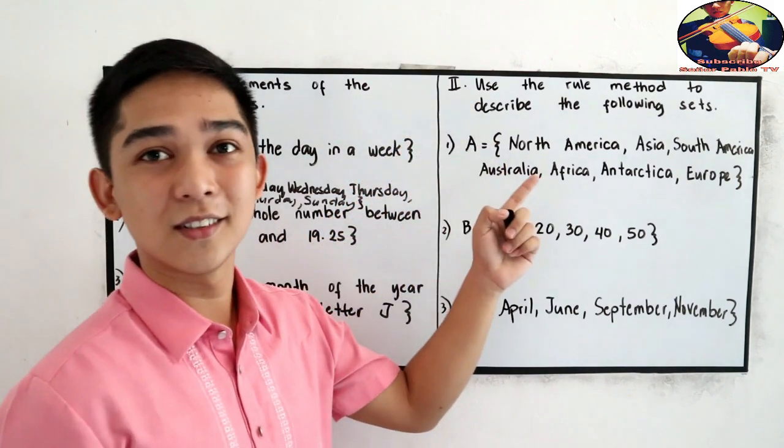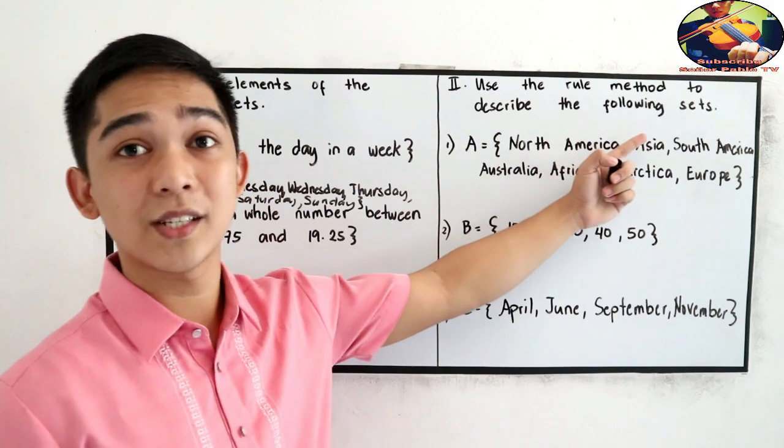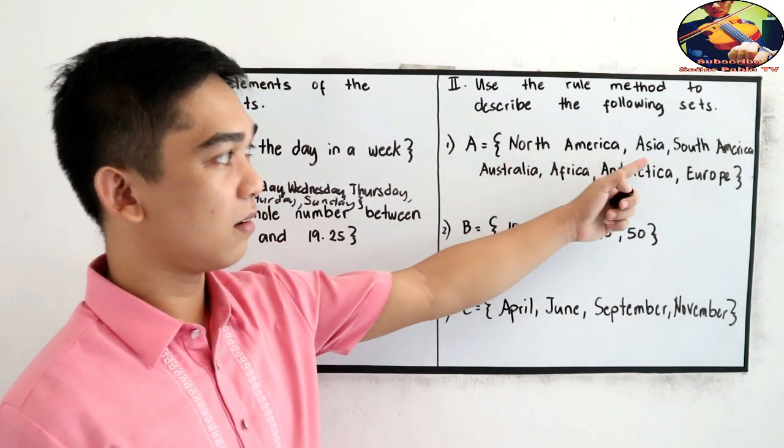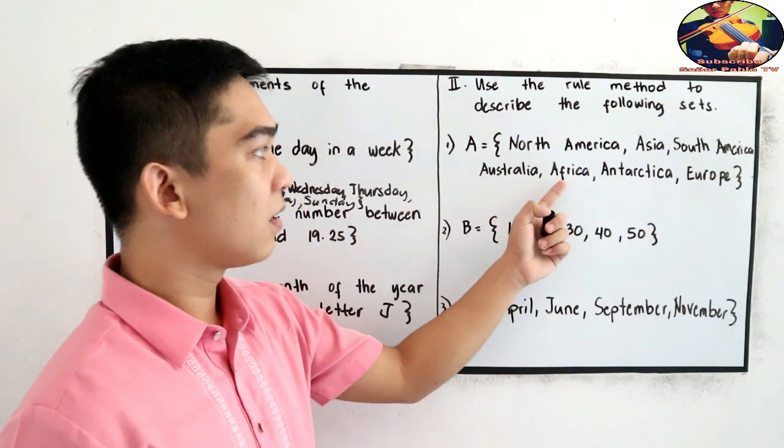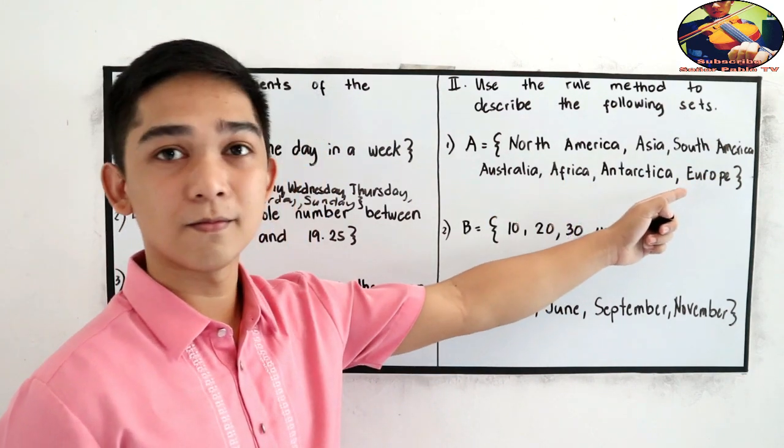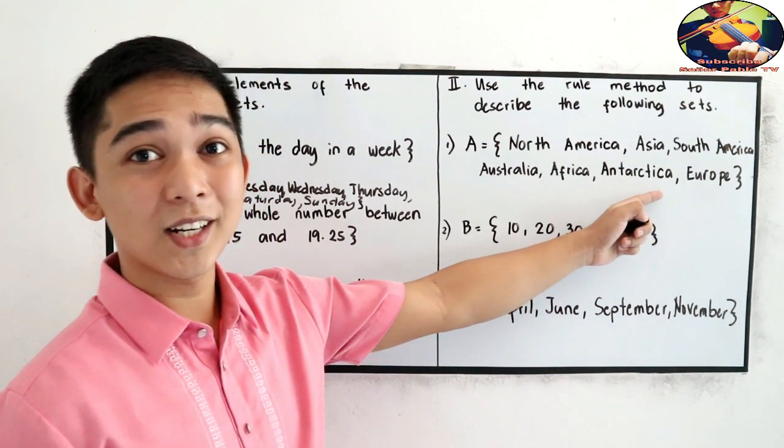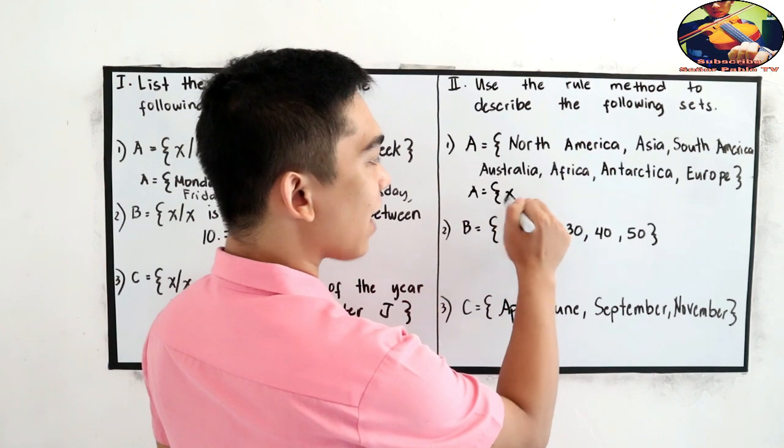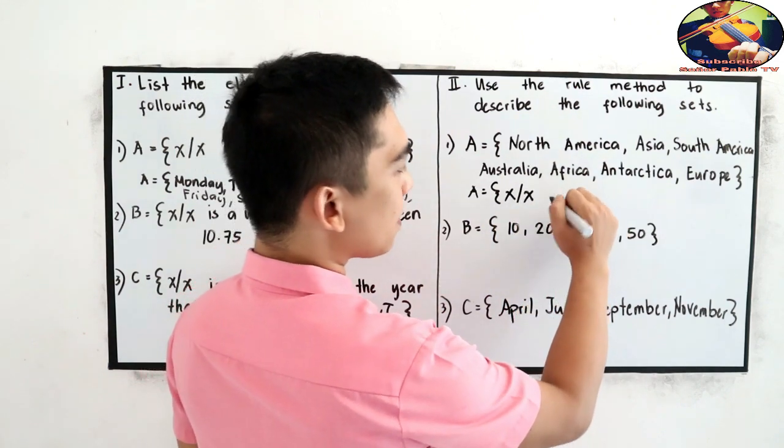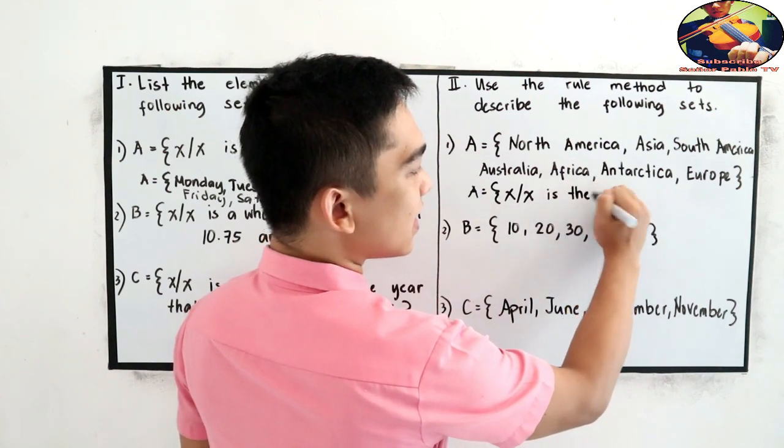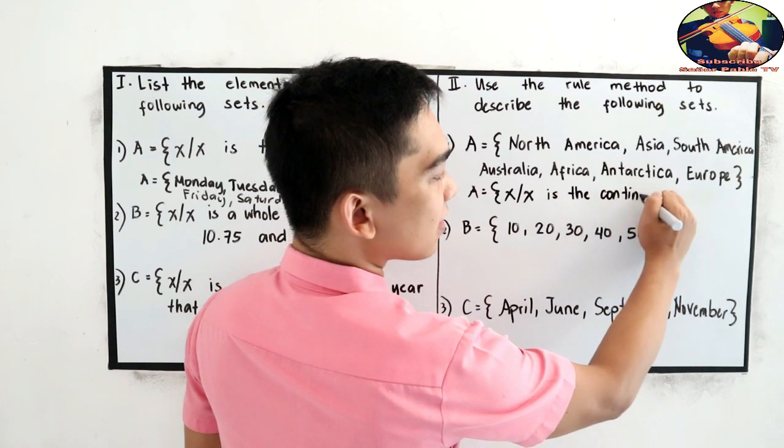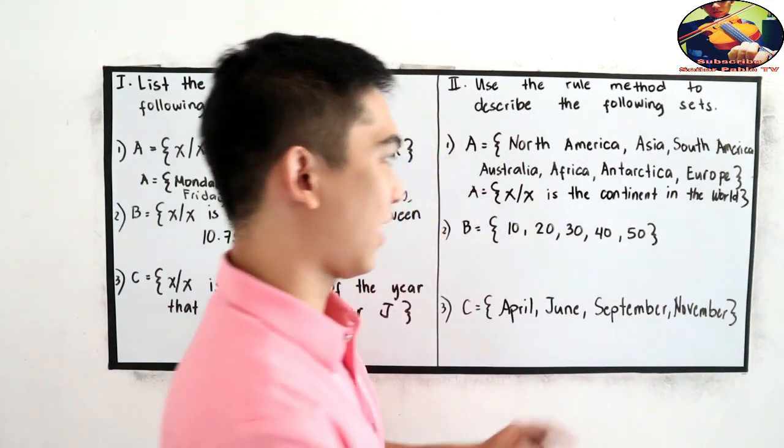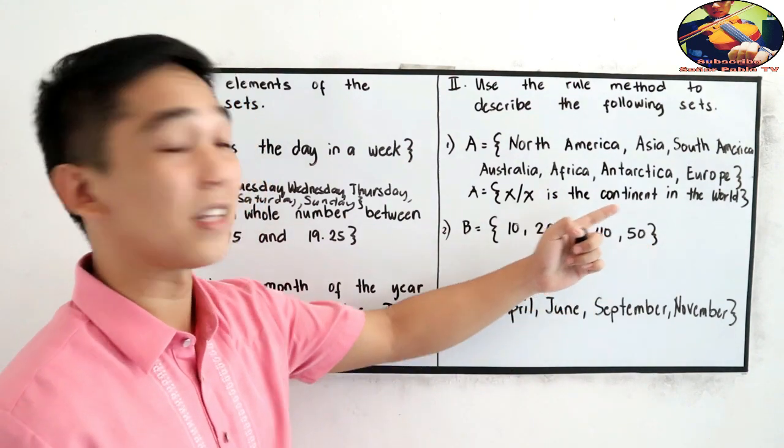For test 2, use the rule method to describe the following sets. Number 1, A: North America Asia South America Australia Africa Antarctica Europe. So, we know that those are the 7 continents. So, A is equal to x such that x is the continent in the world, 7 continents in our planet or the 7th continent in the world.